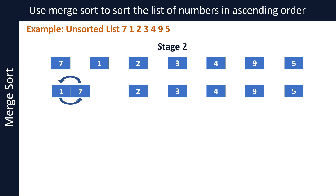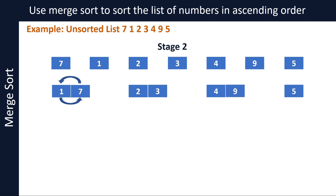Now let's merge the sublists that contain two and three. Since two and three are already in the correct order — two is smaller than three — we do not need to swap them before merging. We can merge four and nine in the same way, and no swapping is required since four is smaller than nine.